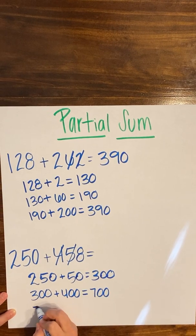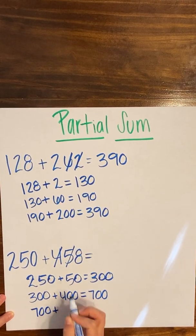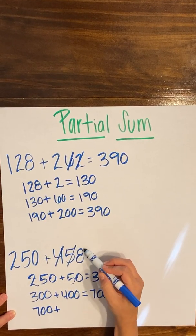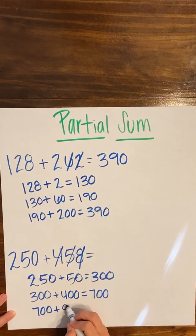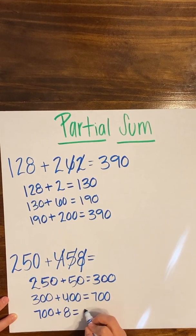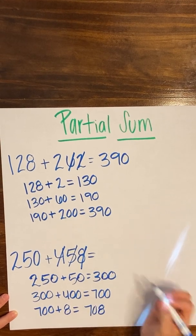Again, I'm going to keep that sum, and I know that looking back up at my first addend, all I have left to add is the eight in the ones place, which is just going to be eight, to give me 708 as my sum.